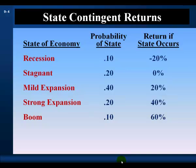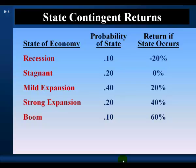There is a 10% probability of a recession; in a recession, the security will earn negative 20%. In a stagnant economy, with a probability of 20%, the security will earn zero. A mild expansion, with a 40% probability, the security will earn 20%. In a strong expansion, with a probability of 20%, the security will earn 40%. If the economy goes boom, and that is a 10% probability, the security will earn 60%.